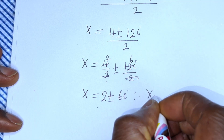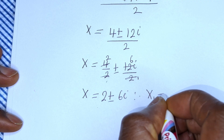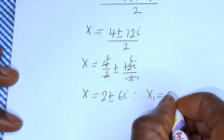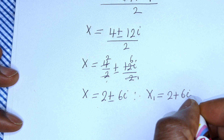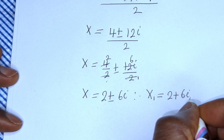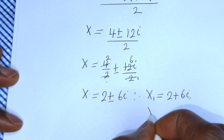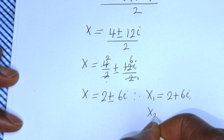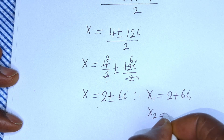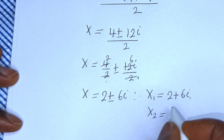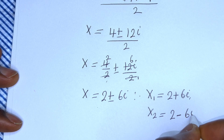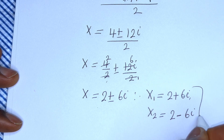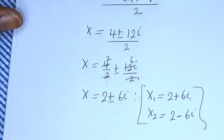Therefore x1 is equal to 2 plus 6i, and x2 is equal to 2 minus 6i. These are the values of x.